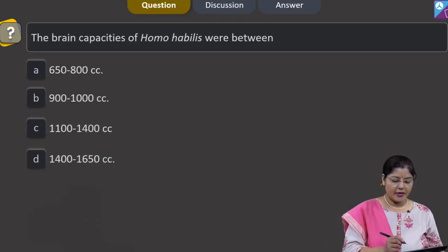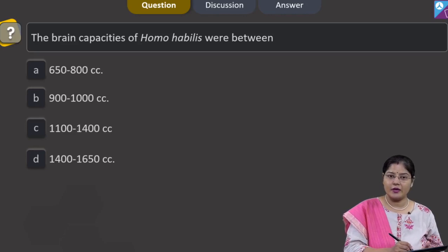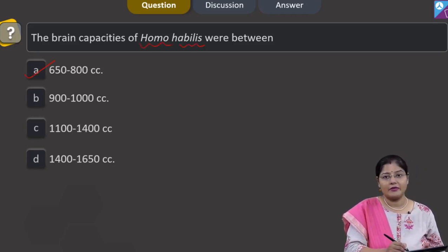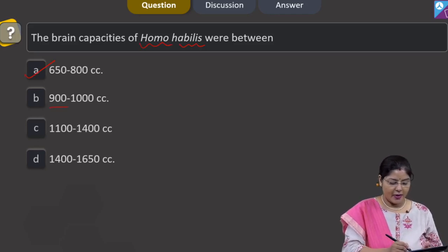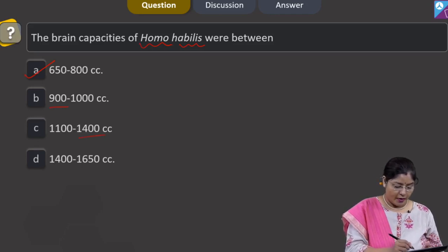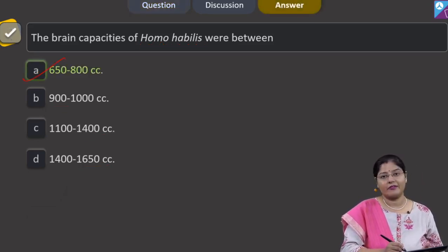The next question asks for the brain capacity of Homo habilis, with options: 650–800 cc, 900–1000 cc, 1100–1400 cc, and 1400–1650 cc. The brain capacity of Homo habilis was between 650 to 800 cc. Homo erectus had a cranial capacity of around 900 cc, Neanderthal men around 1400 cc, and Cro-Magnon men around 1650 cc. The correct answer is Option 1: 650–800 cc.